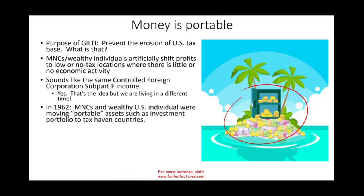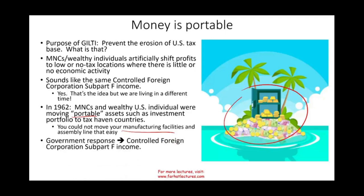But we live in a different time. In 1962, when the controlled foreign corporation and subchapter F income came into place, the portable assets were simply money. You could move your portfolio of stocks, bonds, and investments overseas. You could not easily move your manufacturing facilities to the Bahamas. So the government's response to shifting assets and money to low-tax or tax-haven countries was the CFC subchapter F income framework, which targeted passive income — stocks, bonds, sales income where you just locate there to create sales, and service income.